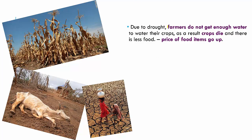Due to drought, farmers do not get enough water for their crops, because of which their crops will die. When crops die, there are not enough grains in the market, so the prices of whatever food grains are there will go up. At times like this, there are some people who take advantage of the situation — they hide the grains that are already there, wait for prices to go up, then release them to make more money. Not just crops, even the livestock and animals that farmers own will die because there is nothing to feed on and no water to drink.